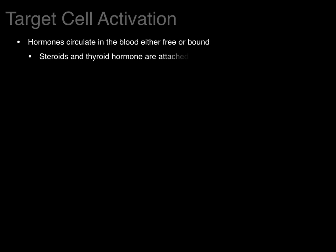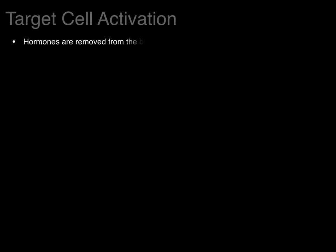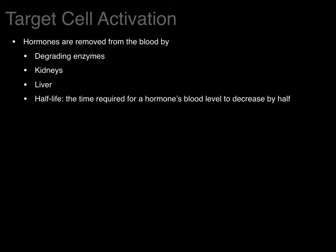Hormones circulate in the blood either free or bound. Steroids and thyroid hormones are attached to plasma proteins — piggybacking on a plasma protein as they travel throughout the blood, then separating as they go into the interstitial space. Peptide hormones circulate within the bloodstream without any carriers. Hormones are removed from the blood by degrading enzymes found throughout the body — for example, acetylcholinesterase breaks down acetylcholine immediately. Kidneys filter and excrete hormones, and the liver also breaks down hormones. This gives us the concept of half-life: the time required for a hormone's blood level to decrease by half.